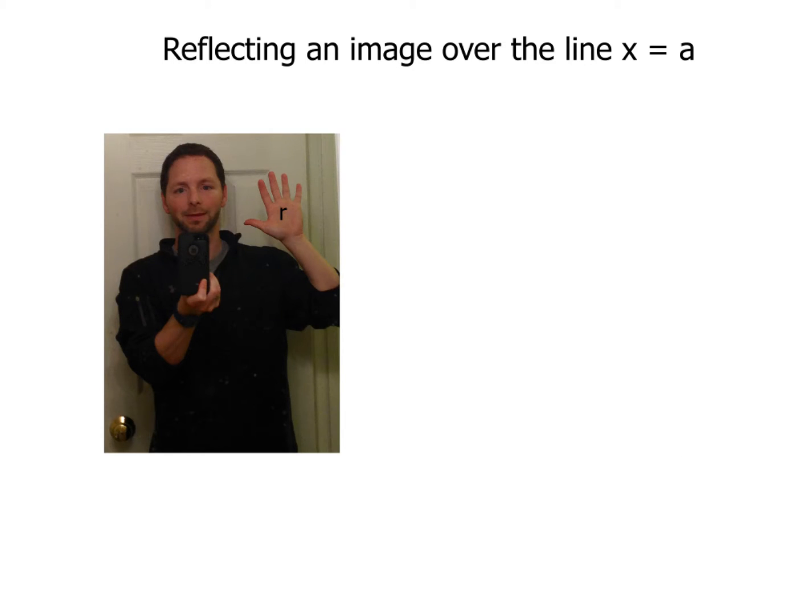All right, how are you guys doing today? This is Mr. Muscarella coming at you and today we're going to take a look at reflecting an image over the line x equals a. Now one of the things you're going to have to remember about a line in this form, x equals a, and a is just any generic number, is that the line is going to be a vertical line around whatever number they give you for a. So there's a couple things I want you to pay attention to here in this lovely little picture of me over here on the left hand side of your screen.